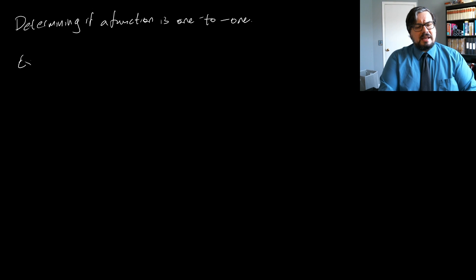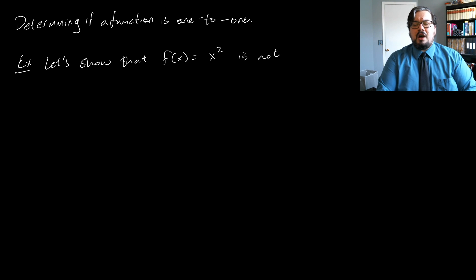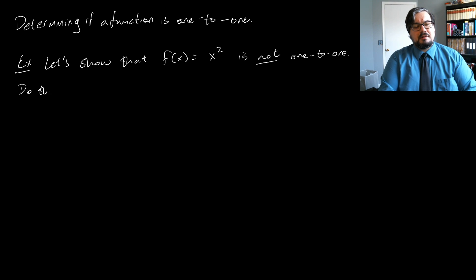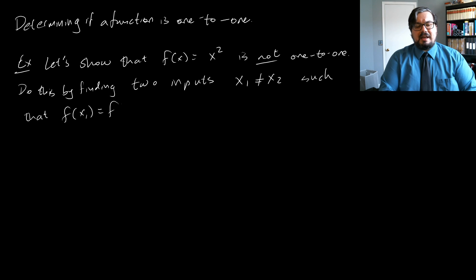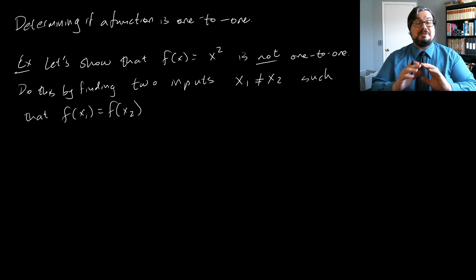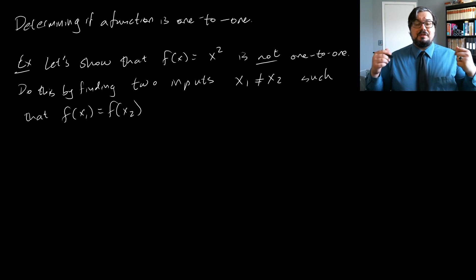For example, let's show that f(x) = x² is not one-to-one. We do this by finding two different inputs x₁ and x₂ that are not the same, such that f(x₁) equals f(x₂). We just have to find specific numbers — all we have to do is find a specific pair so that when you plug them into the function, you get the same number out.